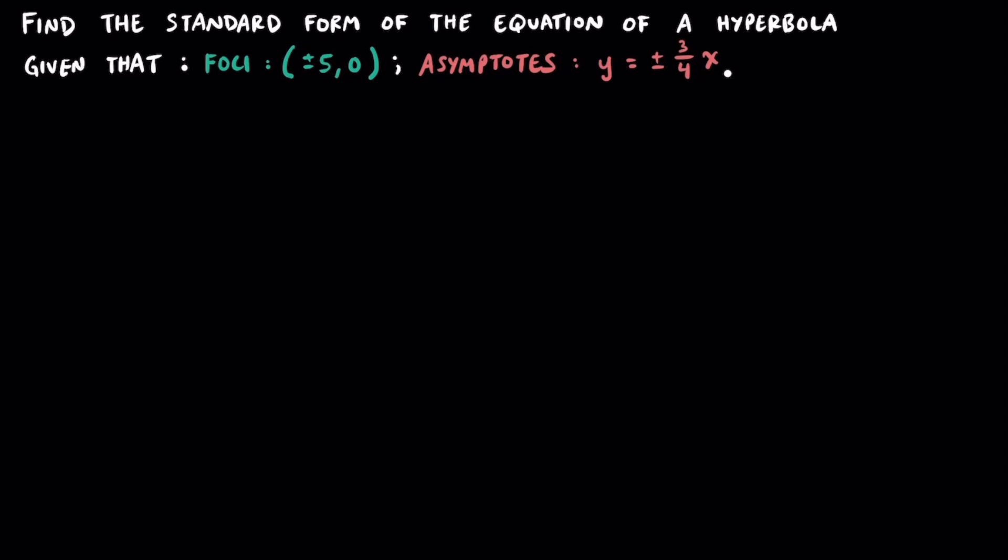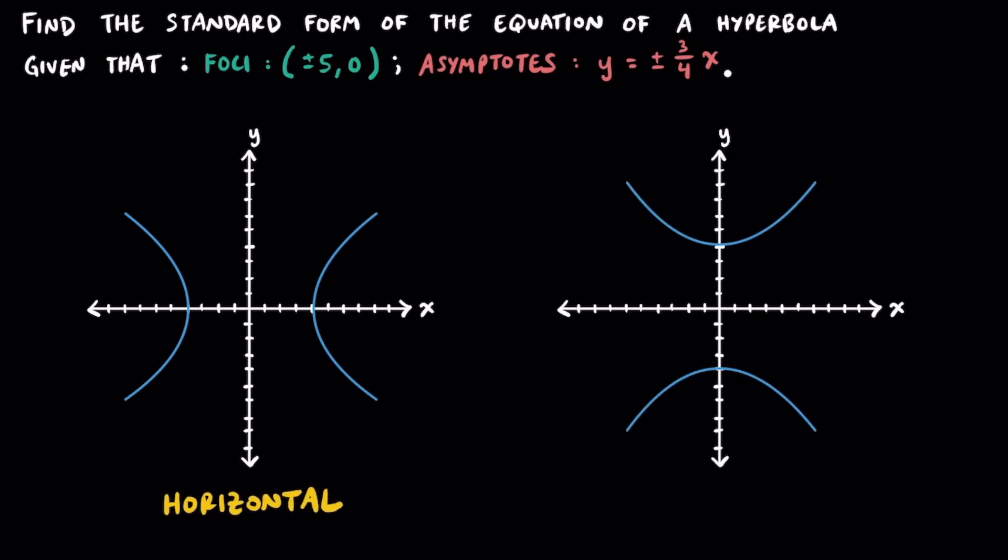Before we can do that, we need to decide if the transverse axis is horizontal or vertical. This is what it would look like if we had a horizontal transverse axis, and this is what it would look like if we had a vertical transverse axis.